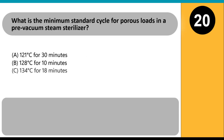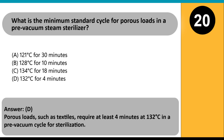What is the minimum standard cycle for porous loads in a pre-vacuum steam sterilizer? A. 121°C for 30 minutes. B. 128°C for 10 minutes. C. 134°C for 18 minutes. D. 132°C for 4 minutes. Answer: D. Porous loads, such as textiles, require at least 4 minutes at 132°C in a pre-vacuum cycle for sterilization.